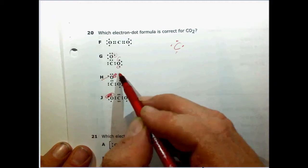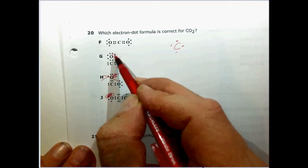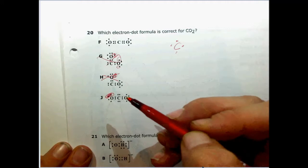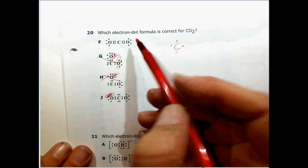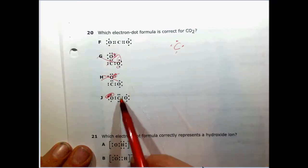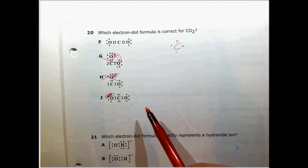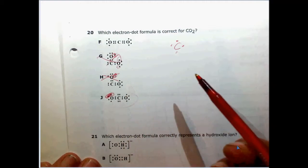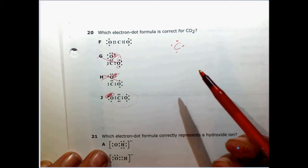So we'll get rid of this. This one has a free electron over here, so we'll get rid of this. So that leaves these two remaining. Now we just have to look at the rules, the octet rule.